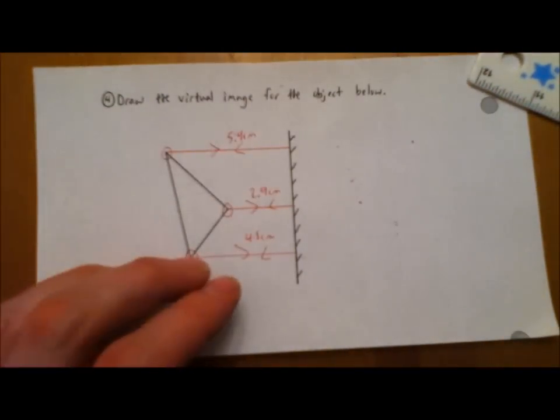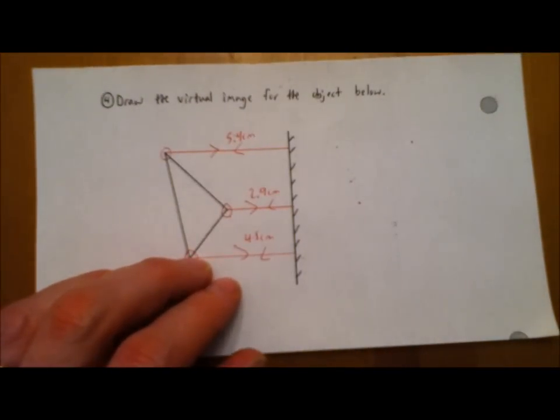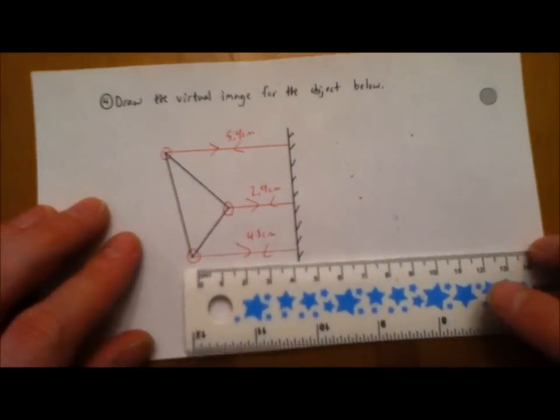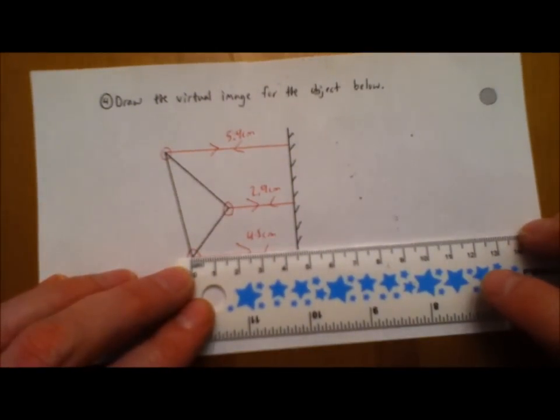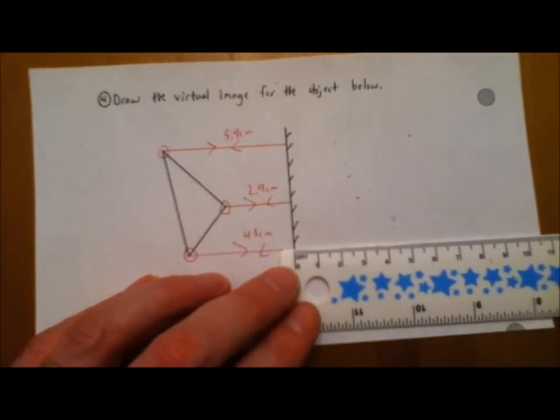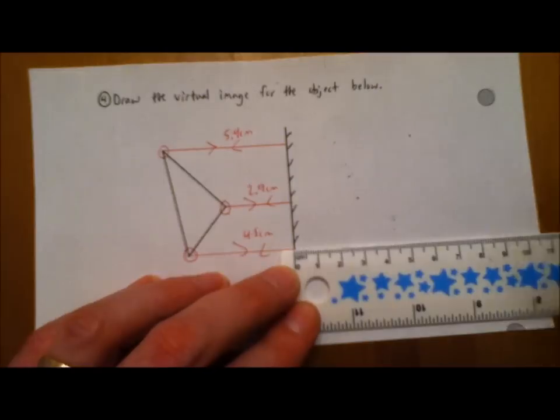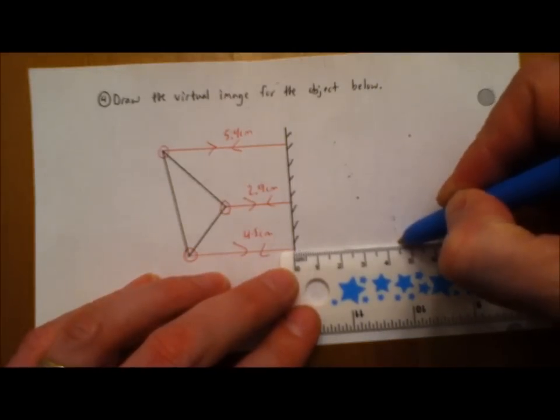Because the distance of the image behind the plane mirror is the same distance as the object, the real object is in front of the mirror. So we use that principle here. So we have 4.5 centimeters, and we'll place that over here, a little dot, 4.5 centimeters.